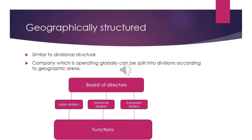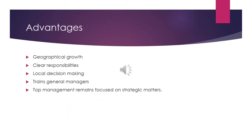For example, a global company can be split into divisions such as an Asian division, an American division, a European division. The rest of the structure is similar to the divisional structure.